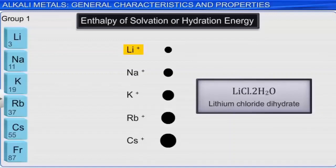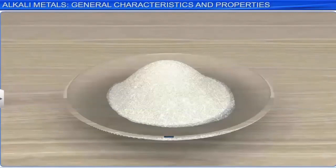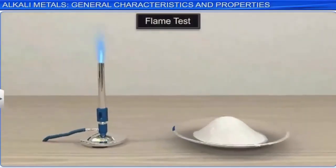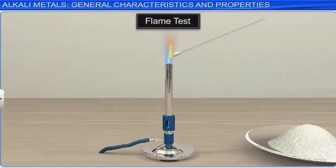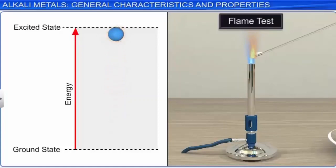One simple qualitative test for the presence of alkali metals in a sample is the flame test. If a small amount of a metal salt is held in a flame, characteristic color changes can be observed due to the movement of electrons. Electrons get excited to higher energy levels from the heat of the flame and emit energy as light as they return to their ground state. For a quantitative test, atomic absorption spectrometry can be used, based on the same fundamental principles.